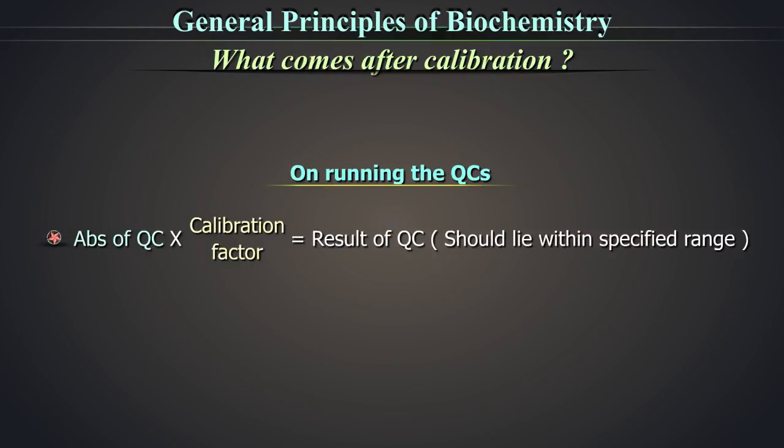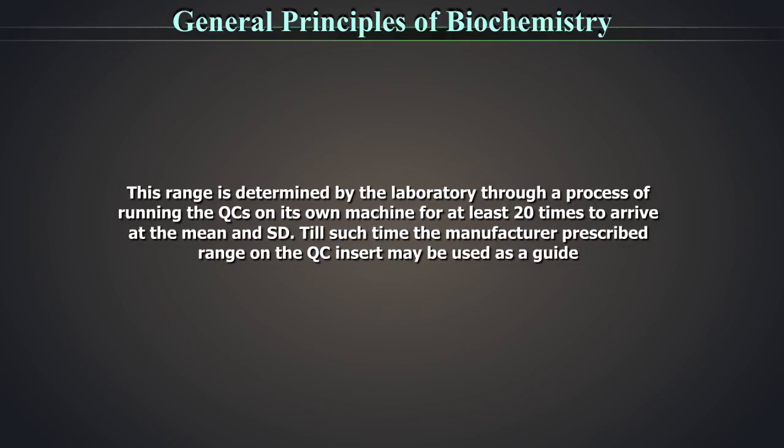On running the QCs, the equipment multiplies the absorbance of the QC with the calibration factor and gives the result. With a valid calibration factor, the QC absorbance values should lie within a specified range. This range is determined by the laboratory through a process of running the quality controls on its own machine for at least 20 times to arrive at the mean and standard deviation.